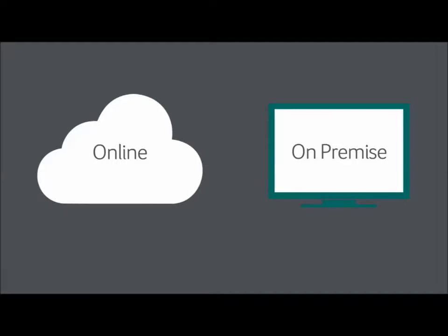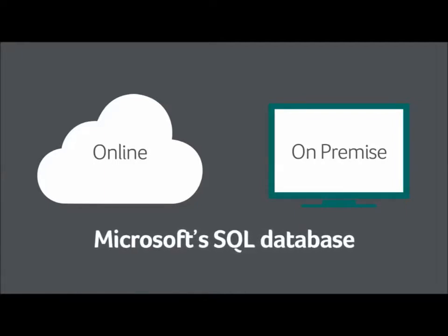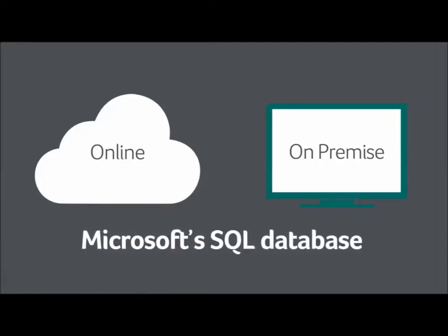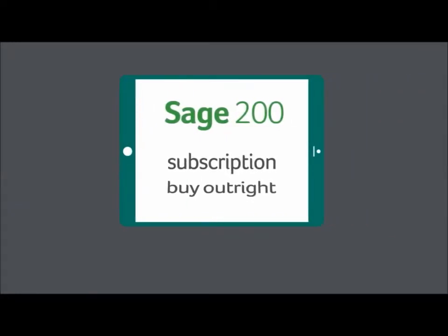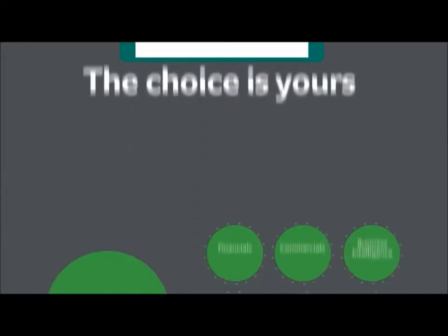Sage 200 is built on Microsoft's SQL database architecture, providing a future-proof solution that scales as your business grows. You can access it through desktop or mobile devices, pay for it by subscription or buy it outright. The choice is yours.